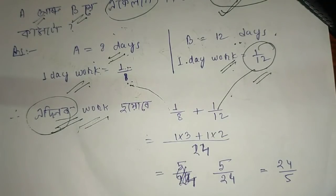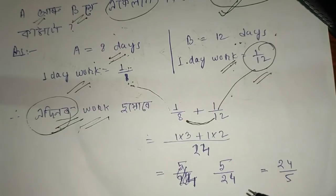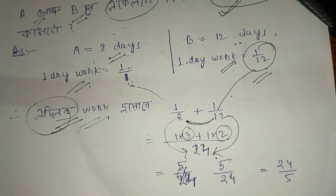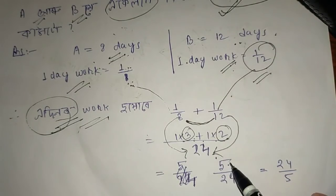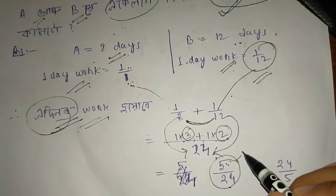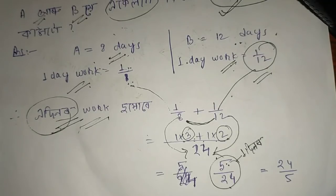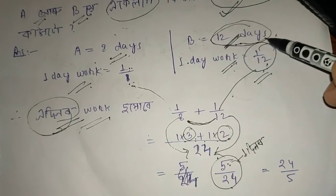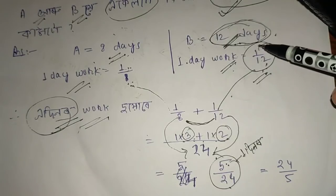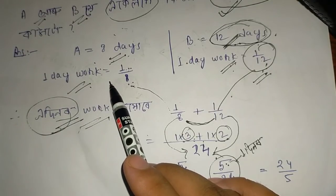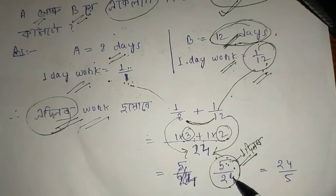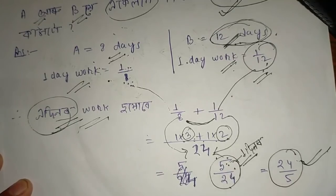Turning: one by eight plus one by twelve. Adding the fractions, three plus two over twenty-four gives five by twenty-four. So together they do 5 by 24 of the work per day. The total work takes 24 by 5 days. You can convert this to a mixed fraction — 4 and 4/5 days.